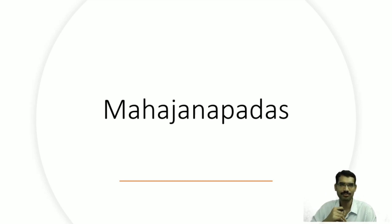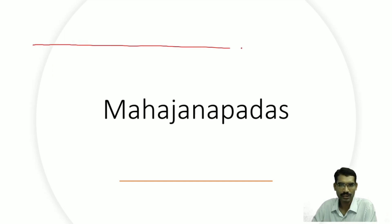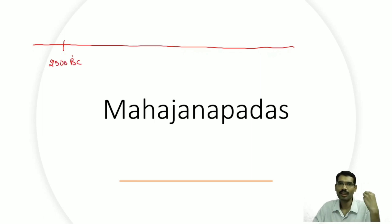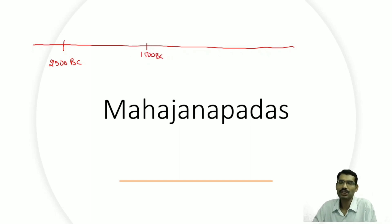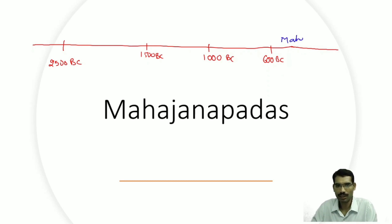Let us see the chronology to understand at what point of time these Mahajanapadas come in our history. If we take the Indus Valley Civilization, it flourished during 2500 BC and declined after 1750 BC. By 1500 BCE a completely new civilization started — the Vedic Civilization. The early Vedic period ran from 1500 BC to 1000 BC, the later Vedic period from 1000 to 600 BC, and from 600 BC onwards the Mahajanapada period starts.